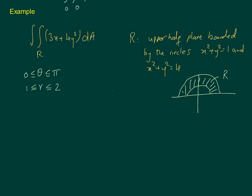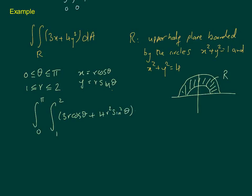Now we're ready to go into this. Remember, x is r cosine theta and y is r sine theta. So our integral becomes the integral from 0 to π, 1 to 2, of (3r cosθ + 4r² sin²θ) · r dr dθ. Continuing to integrate that, it comes out to the integral from 0 to π of (7 cosθ + ... sin²θ) dθ after substituting the limits, and that equals 15π/2.